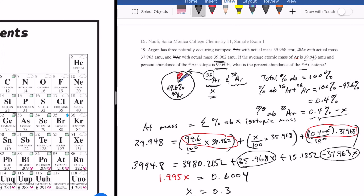Now, 0.3 is already the actual percentage. You don't have to multiply this by 100, because when we did our original calculation, we let that x be equal to the percent abundance, and the 100 is already, the percent 100 is already expressed here. So that then is the percent abundance of the 36 argon isotope.